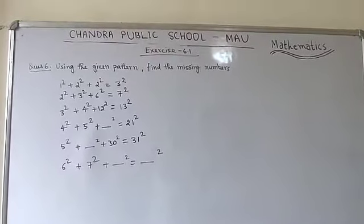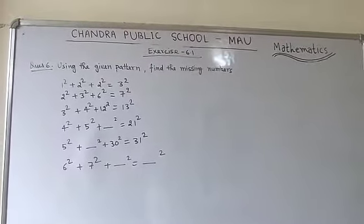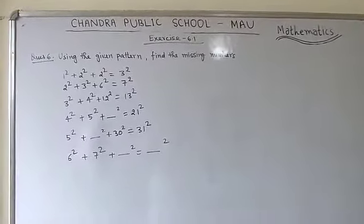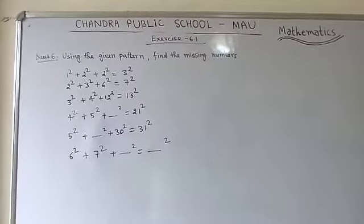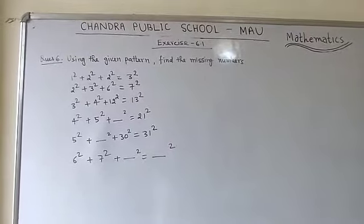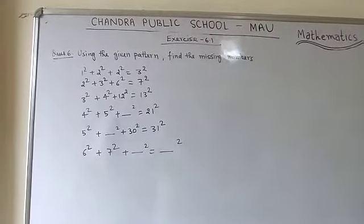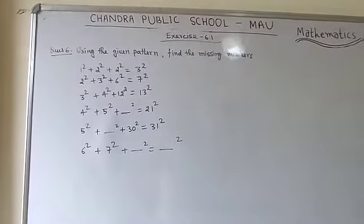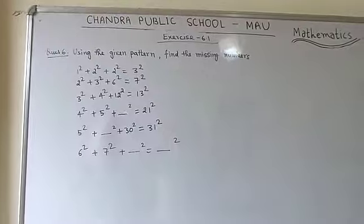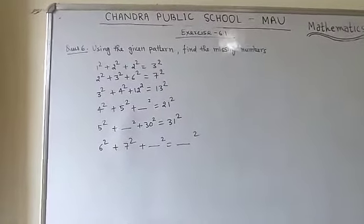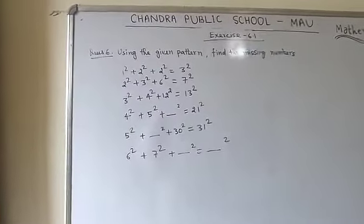Now here is question number 6 of exercise 6.1: using the given pattern, find the missing number. First you need to find the pattern being followed, then you will be able to find the missing number.